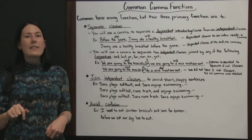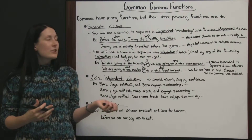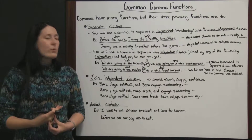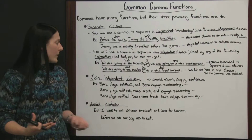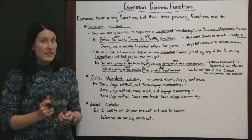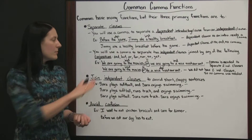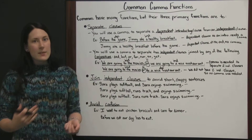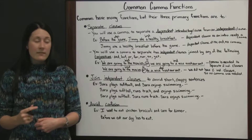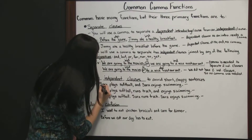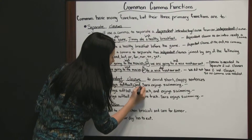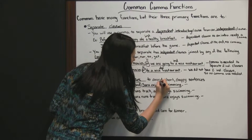Now let's look at the second primary function of a comma: to join independent clauses — to avoid short, choppy sentences. Generally, whenever we are going to join independent clauses, we're doing it so that we don't have a series of short, choppy sentences. 'Sarah plays softball, and Sarah enjoys swimming.' In this one, we had an independent clause, our conjunction, and another independent clause.